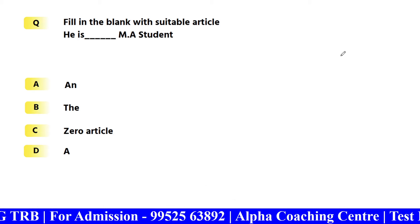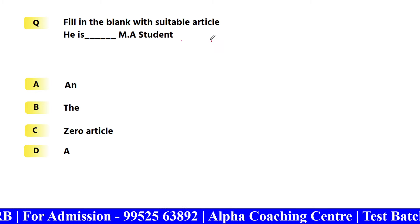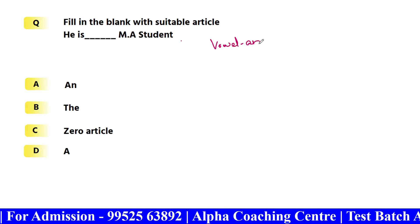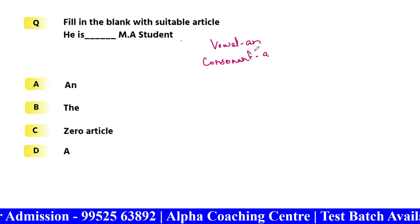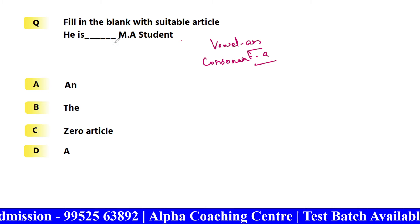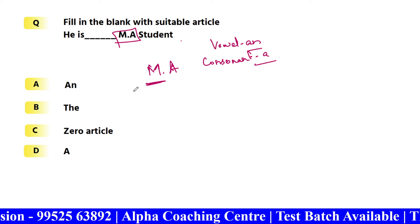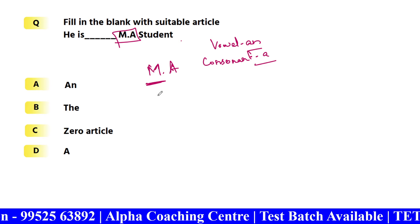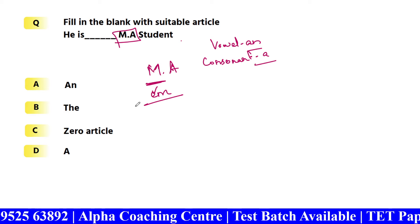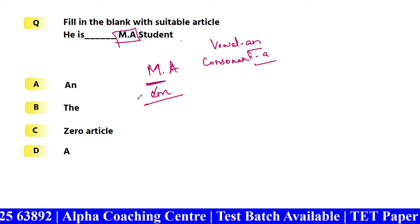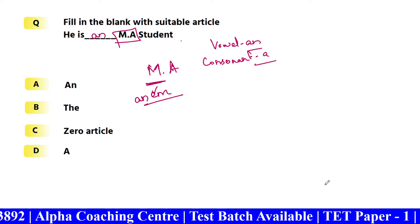Next: 'He is dash MA student.' This is an article question. Usually for a vowel sound we use 'an' and for a consonant sound we use 'a'. The letter M starts with a consonant letter, but it has a vowel sound — 'em'. So it is a vowel sound; we use 'an MA student'.